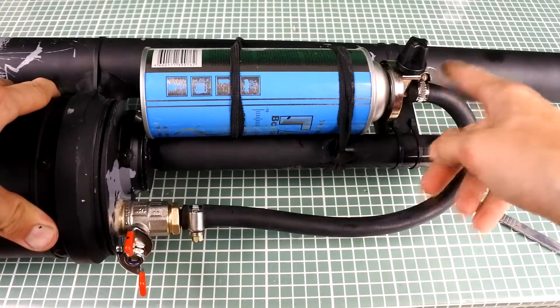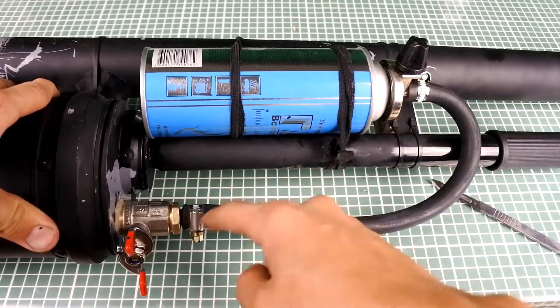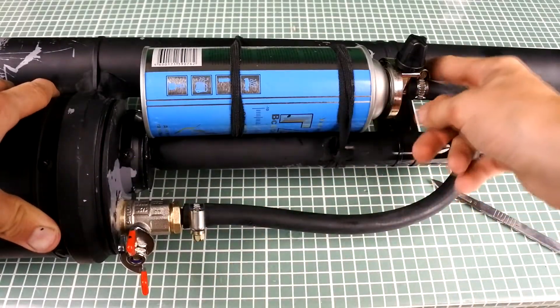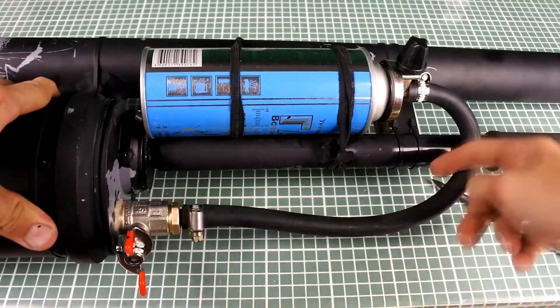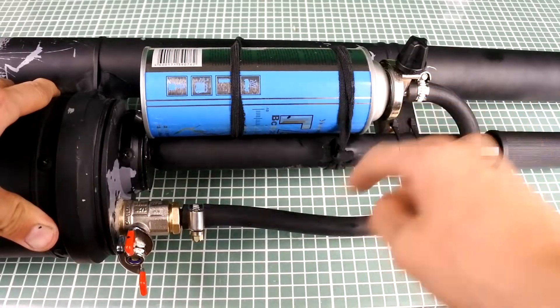And now how does it work? Firstly we need to close water tap and open gas tap. After two seconds close it, then open and close water tap. This scheme supplies an equal amount of gas each time.